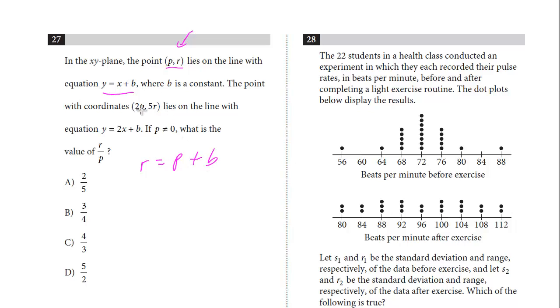That's the first equation. Second one, here's the coordinate point. (2P, 5R), I'm going to plug in this equation. So our Y is 5R. 2X, X is 2P, so 2 times 2P is 4P plus B. Now, we want to get R over P. And if you notice, we've got R, P, and B.